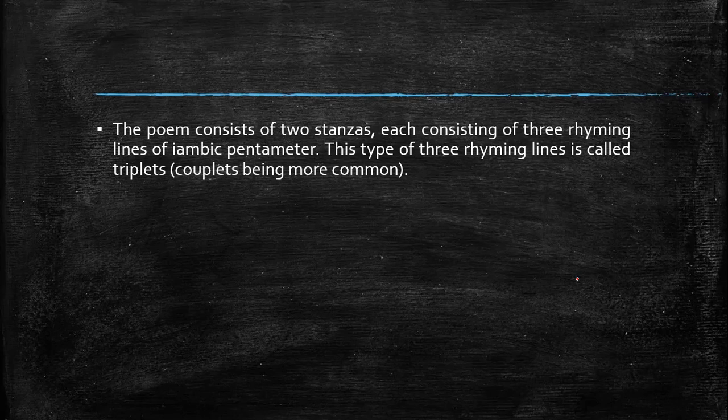When it comes to this poem, it consists of two stanzas, each consisting of three rhyming lines of iambic pentameter. This type of three rhyming lines is called triplets. Always keep in mind: this poem consists of two stanzas.